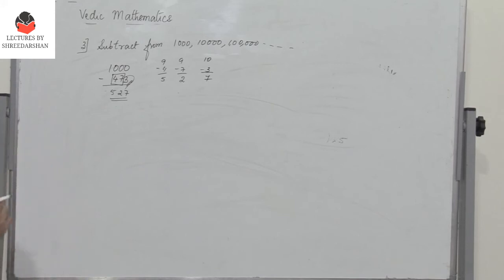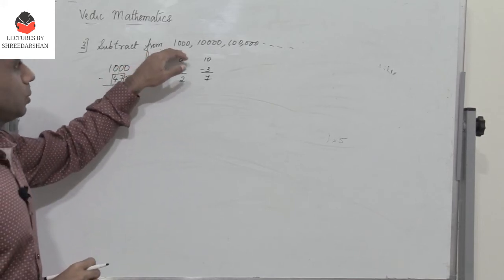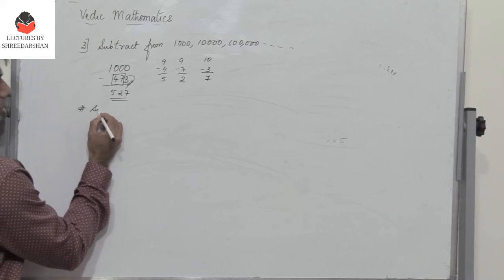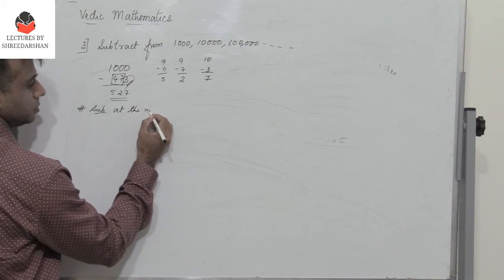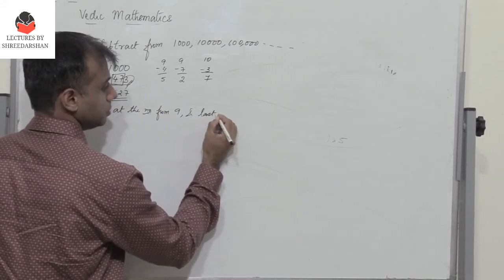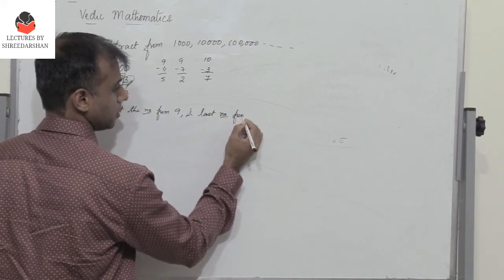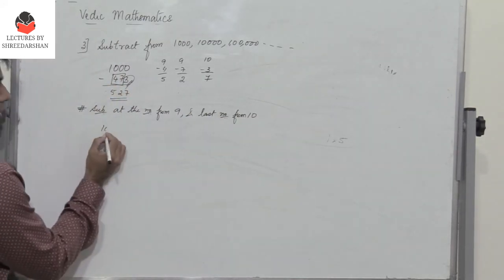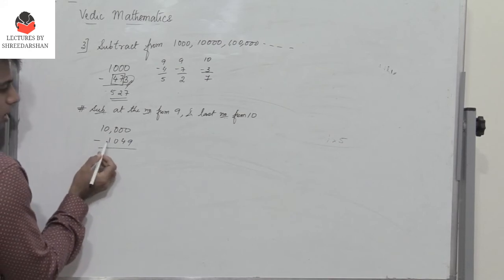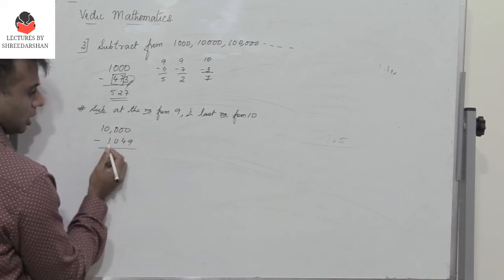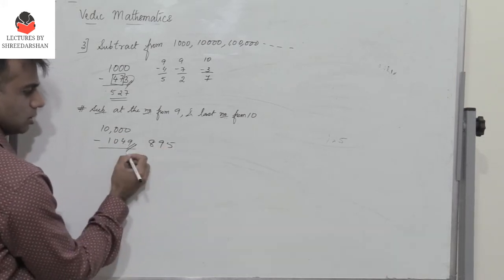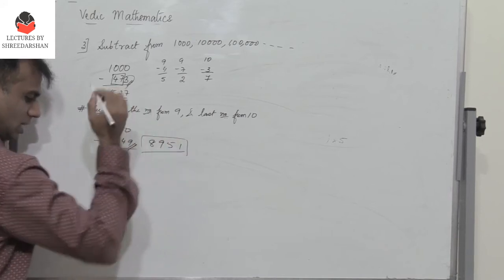So the rule is: if you have to subtract from a number that is 1 followed by zeros, subtract all the digits from 9 except the last one, and subtract the last digit from 10. Let's take another example: 10,000 minus 1049. Subtract 1, 0, 4 from 9: you get 8, 9, 5. Then subtract the last digit 9 from 10: you get 1. So the answer is 8951.